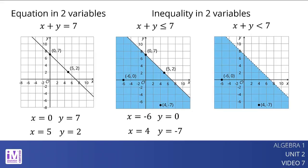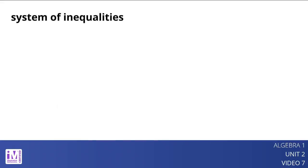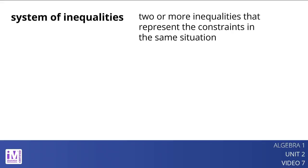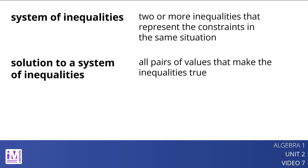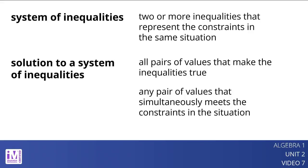A system of inequalities is two or more inequalities that represent the constraints in the same situation. The solution to the system of inequalities is all the pairs of values that make the inequalities true, or any pair of values that simultaneously meets the constraints of the situation. The solution to the system is often represented by a region on a graph.